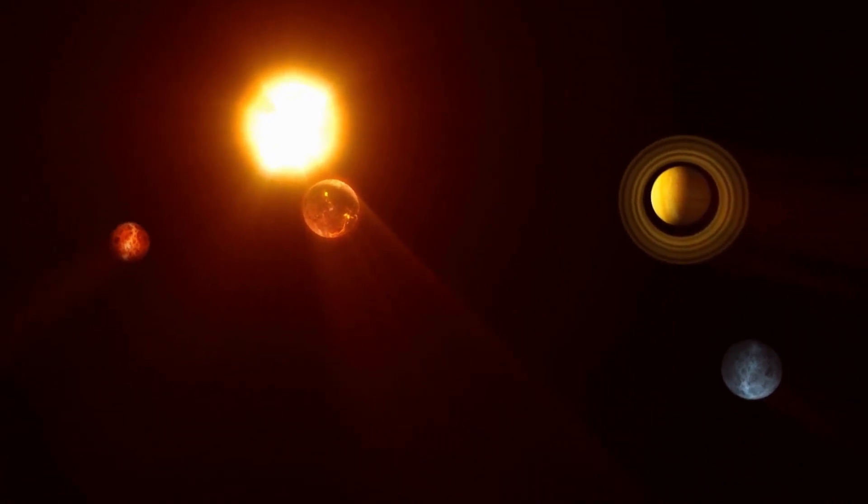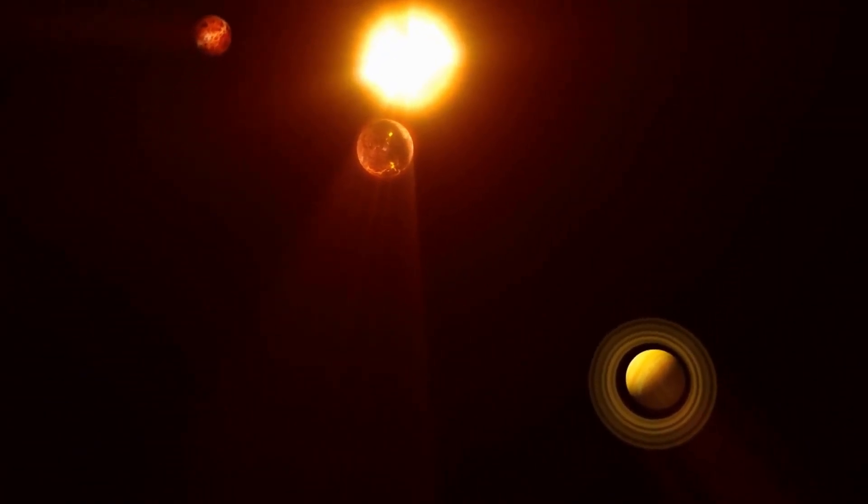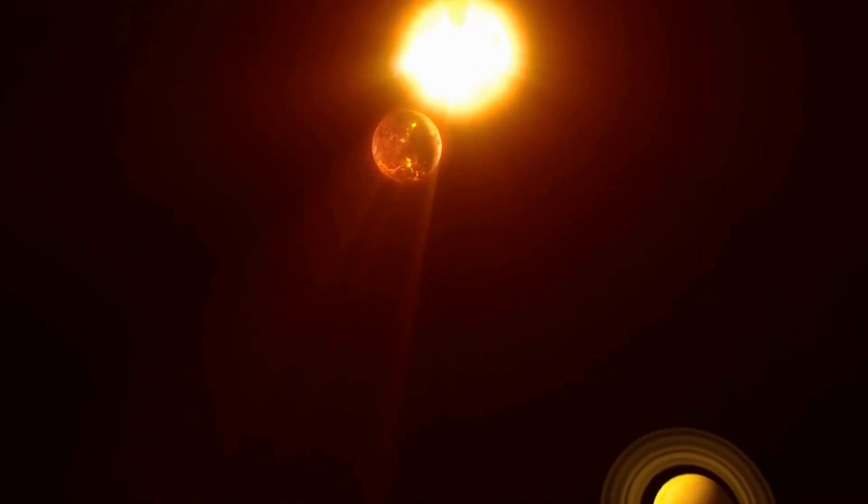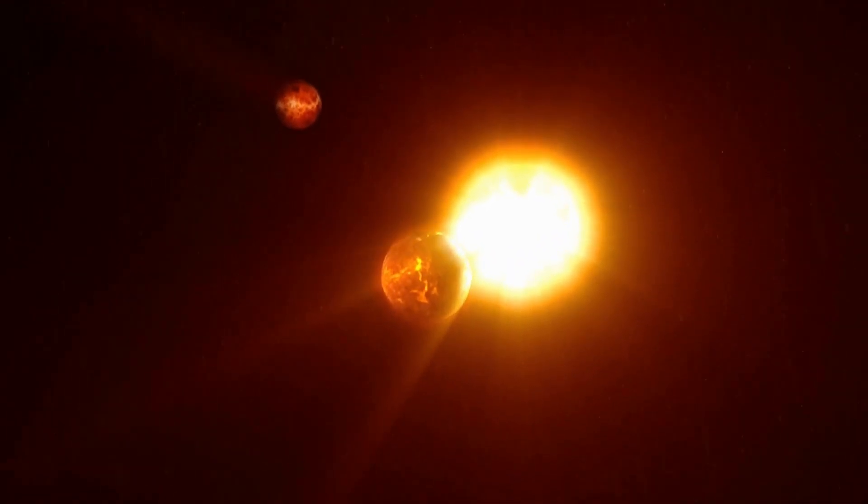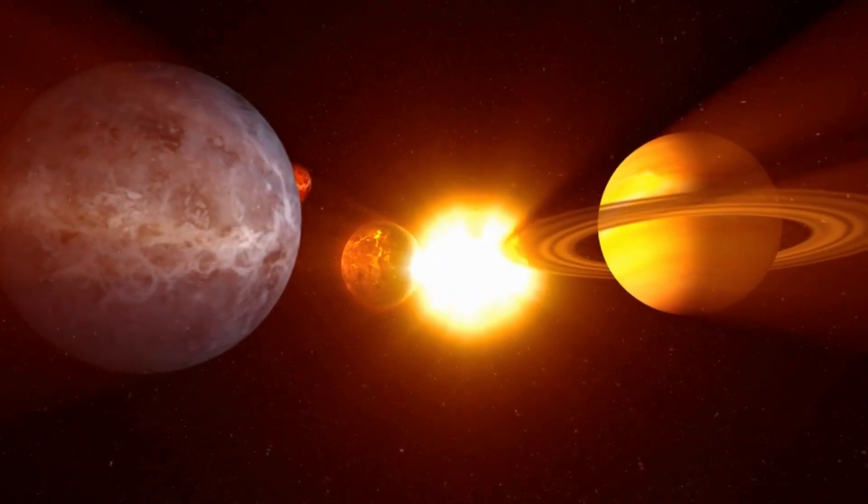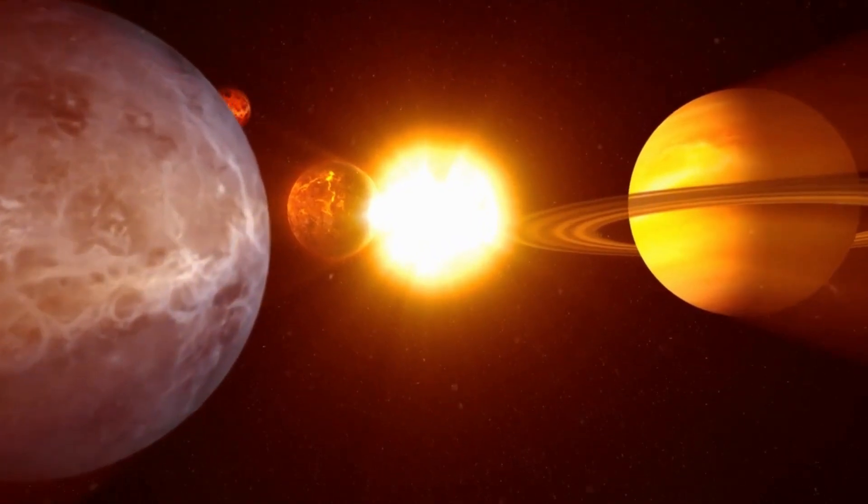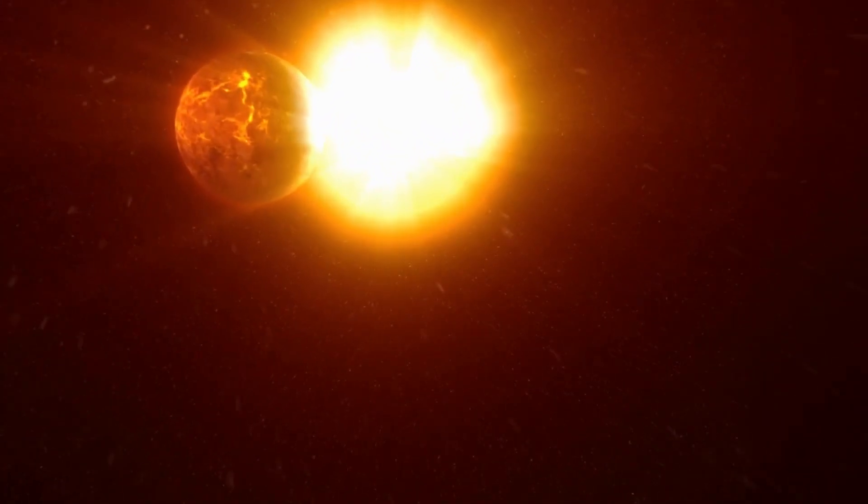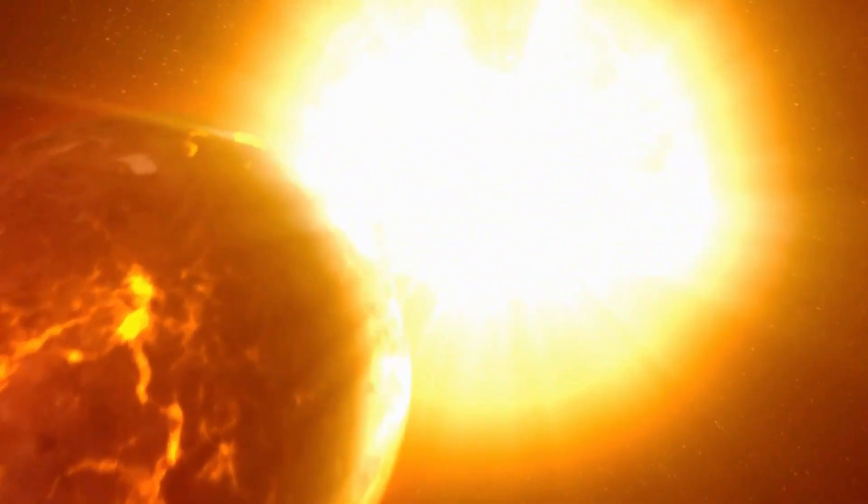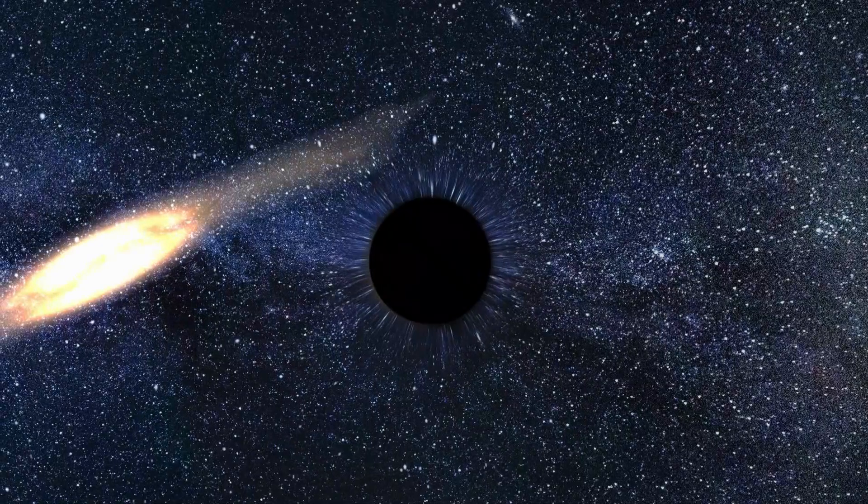As we discussed earlier, the gravitational pull of a small black hole is extremely strong. If a small black hole entered our solar system, it would cause significant disruption to the orbits of the planets, potentially causing them to collide with one another or be flung out of the solar system entirely.